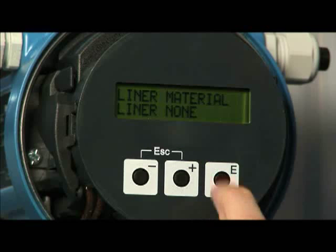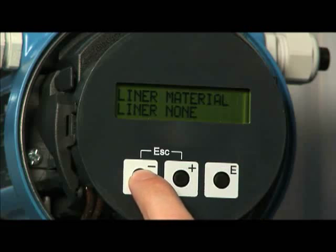If a lined pipe is being used, the material of the liner will need to be entered along with the thickness of the liner. If the pipe is not lined, simply choose None.